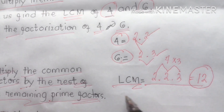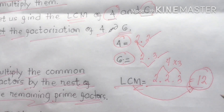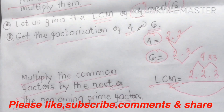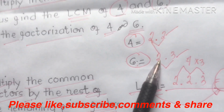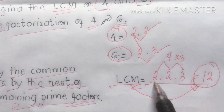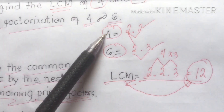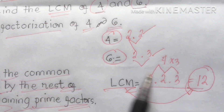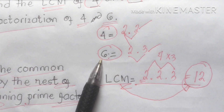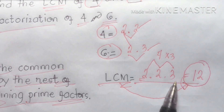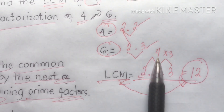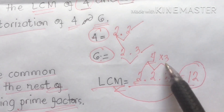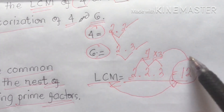12 is our LCM. Did you understand, my dear students? So first get the common factor between 4 and 6, jot it down. The remaining factor of 4 is 2, jot it down. The remaining factor of 6 is 3, jot it down. Then multiply: 2 × 2 × 3 = 12. The result is 12.